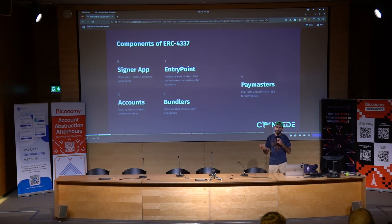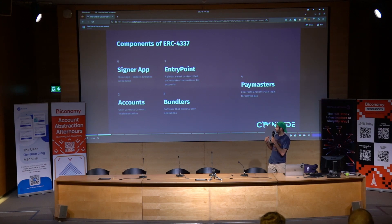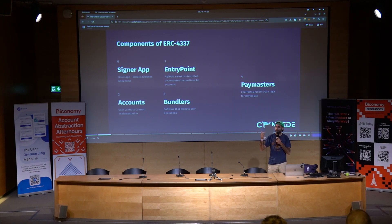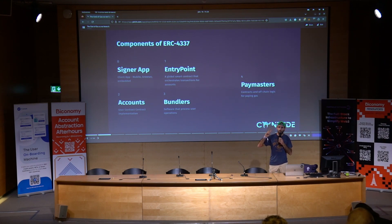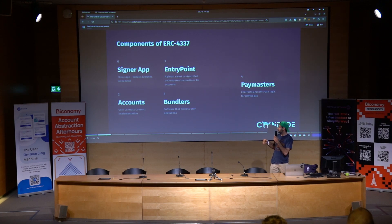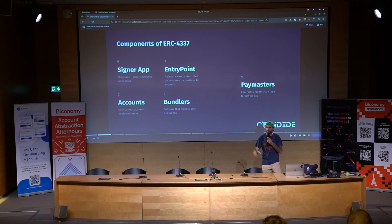So quickly, account abstraction's components. I can pull it into five components. The signer app, which is usually a mobile app or an extension, or you have seen like embedded wallets recently. You have the entry point contract, which is the global entry point contract everybody is using. And you have accounts — it could be a safe account, contract account, or any type of account.